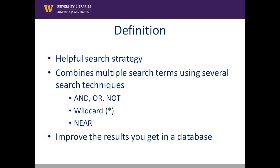By now, you are familiar with the Boolean operators AND, OR, and NOT. Remember that these connectors are used between your keywords to tell the database how you want to combine your words and what kinds of terms should be present in your search results. But what happens when you need to use different connectors, maybe a combination of ANDs and ORs, in one search box?